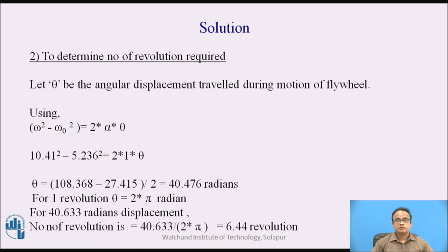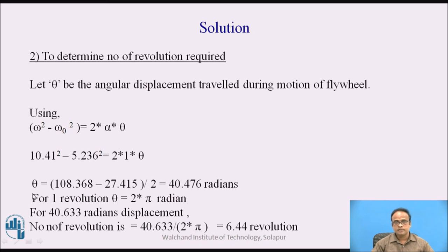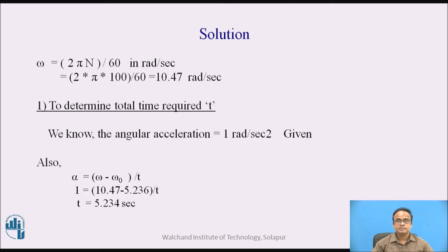Now let us determine the number of revolutions required. We consider theta as the angular displacement traveled during motion of the flywheel. Using the expression omega squared minus omega 0 squared equals 2 times alpha times theta — analogous to v squared minus u squared equals 2as in linear motion — and substituting omega, omega 0, and alpha, we get angular displacement as 40.476 radians. Since one revolution equals 2 pi radians, the number of revolutions is 6.44 revolutions.